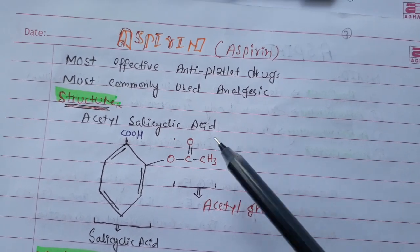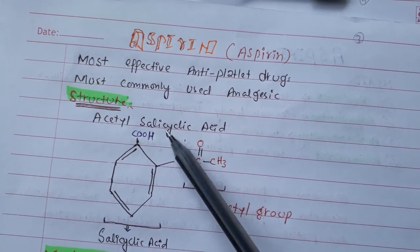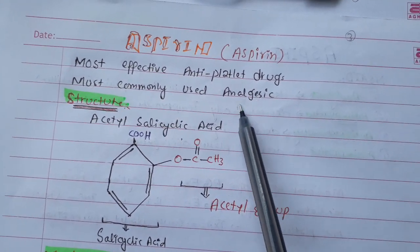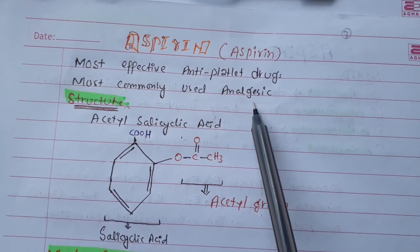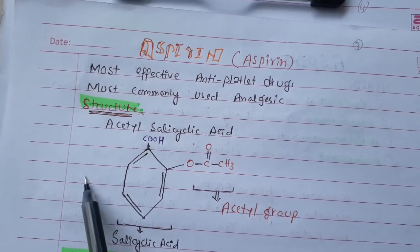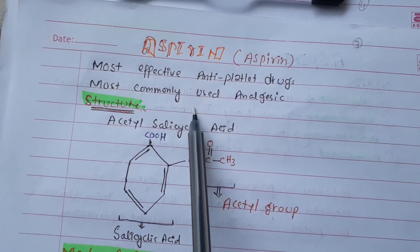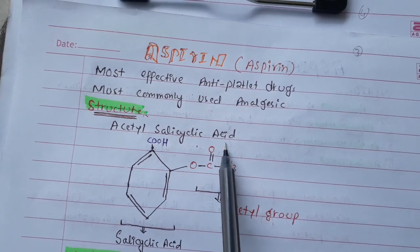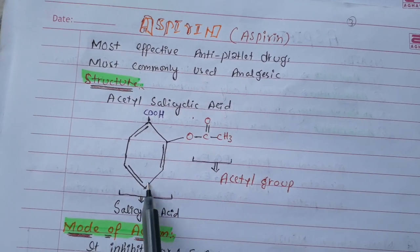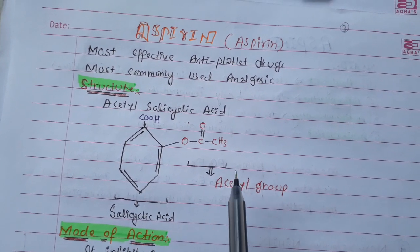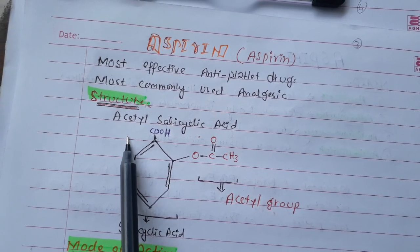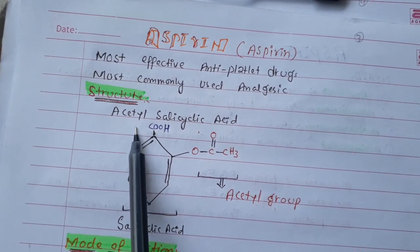Aspirin is the most effective antiplatelet drug and most commonly used analgesic. Aspirin can also be called acetylsalicylic acid — this is the salicylic acid component, and this is the acetyl group. This acetyl group is very important, as we will explain.